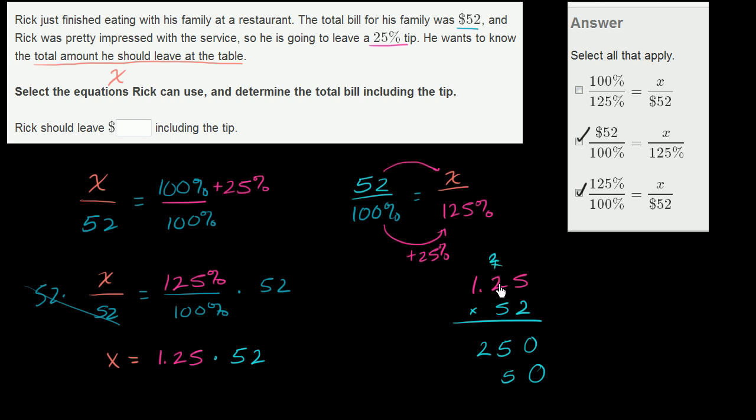5 times 2 is 10, plus 2 is 12. 5 times 1 is 5, plus 1 is 6. So we get 0. Let's carry that 1. We get a 5. We get a 6. And then we have two numbers behind the decimal point. It is 65.